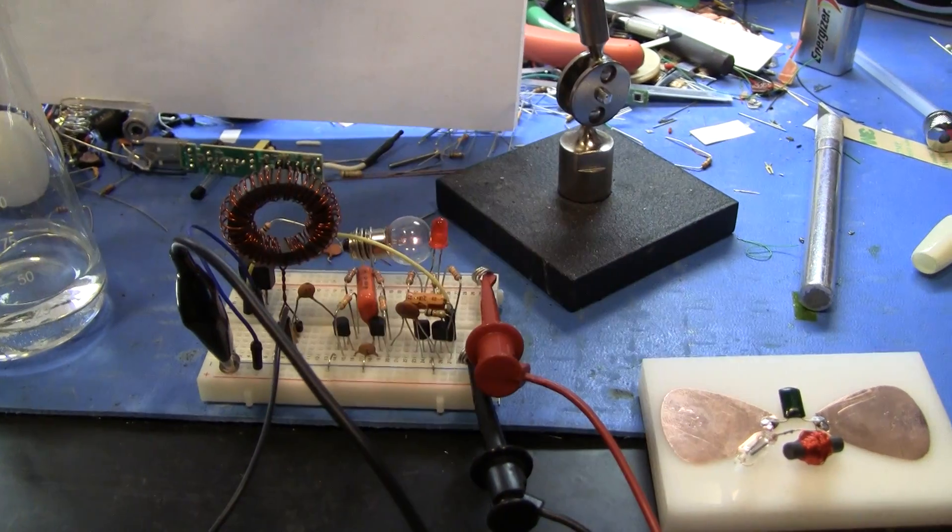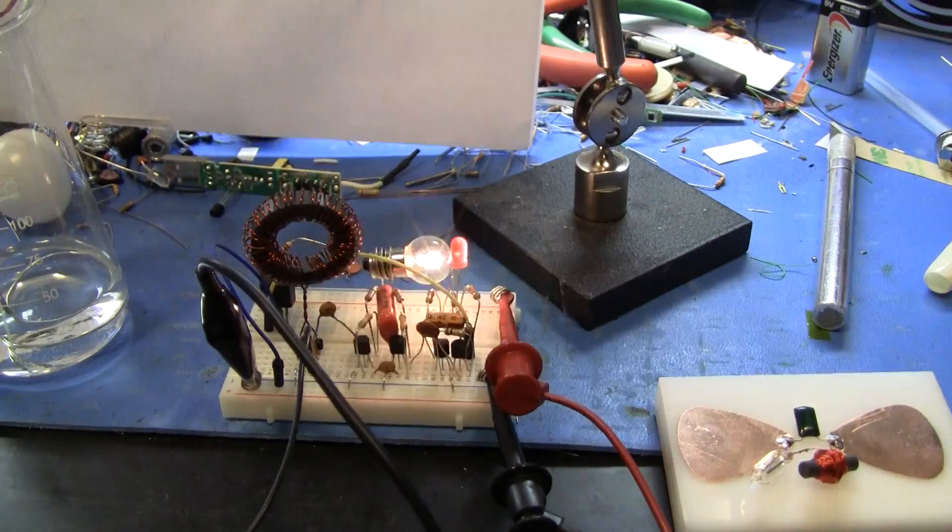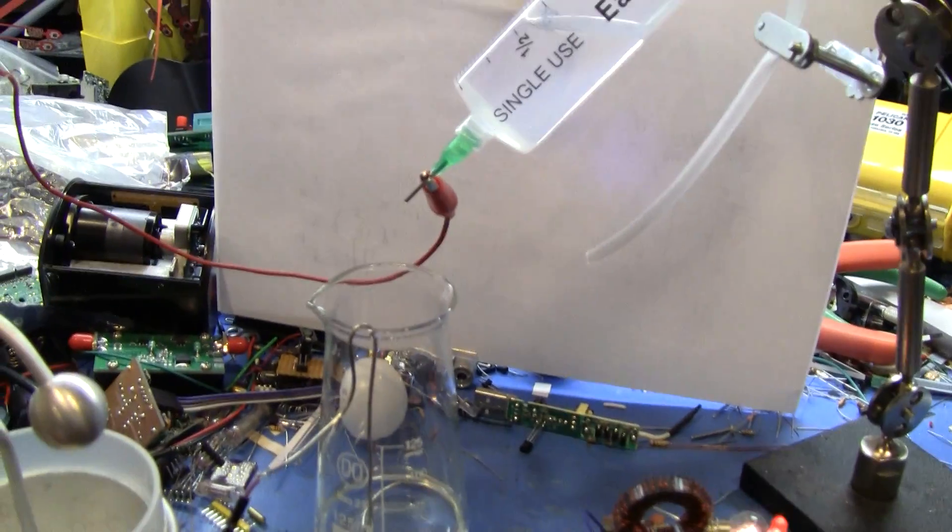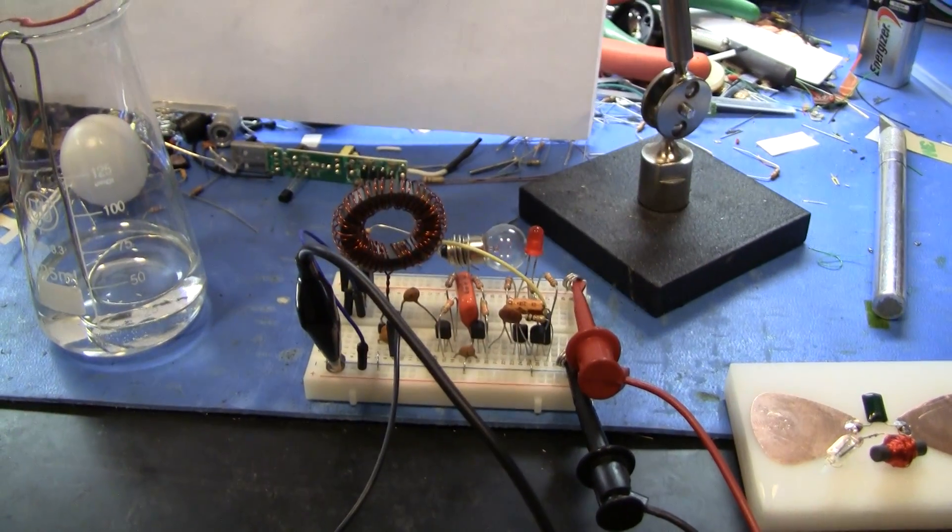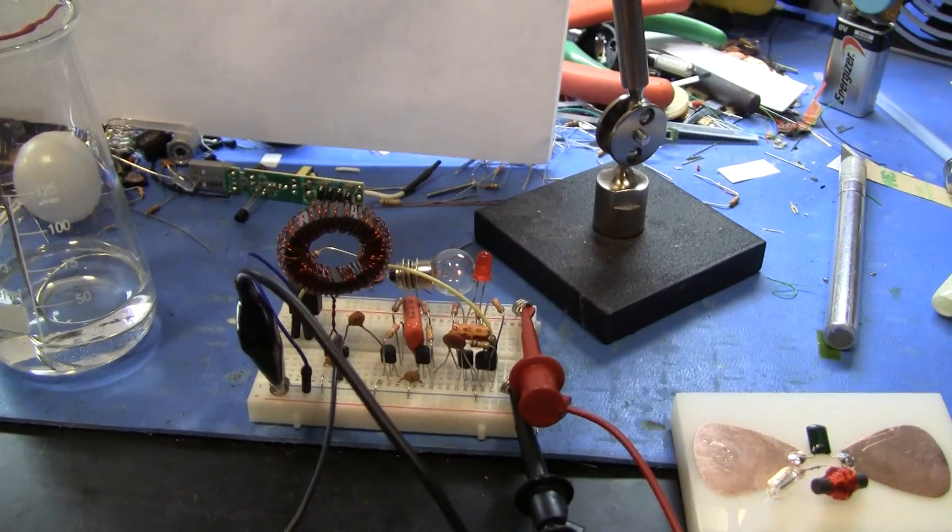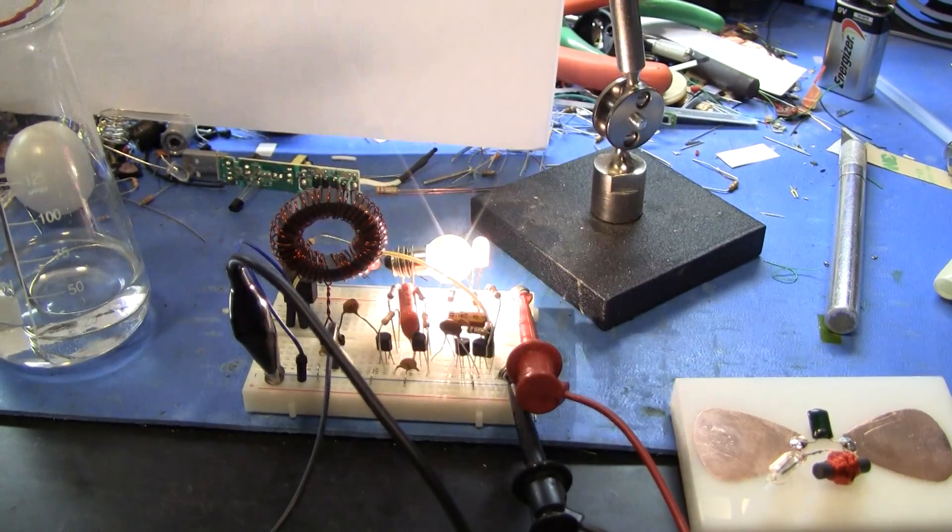Then there's a monostable and it's driving the bulb via a MOSFET. So basically each little bit of charge makes the front end of this lightning detector ring and then that event gets amplified up and triggers the monostable.